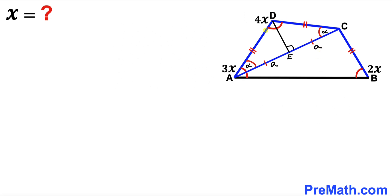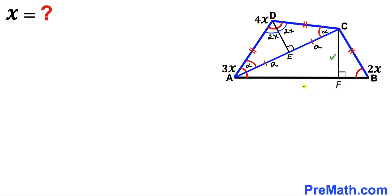We know the whole angle ADC is 4x. Since the two congruent triangles split it equally, each half is 2x. So angle ADE is 2x and angle CDE is 2x. In the next step, we drop a perpendicular CF onto side AB.